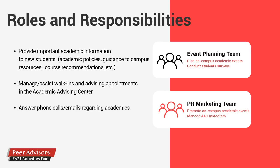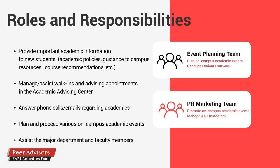We are also responsible for on-campus academic events and assist our major departments and faculty members. Our organization is divided into two groups: the Event Planning Team and the PR Marketing Team. While both have identical core roles, the Event Planning Team focuses more on planning academic events and conducting student surveys, while the PR Marketing Team focuses on promoting events and managing the official Instagram of the Academic Advising Center.